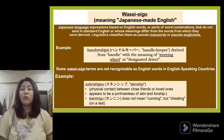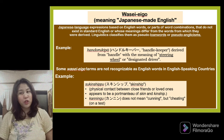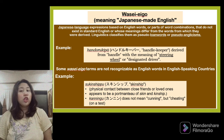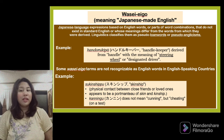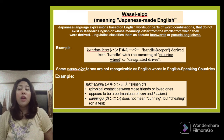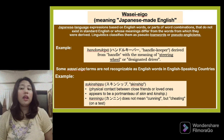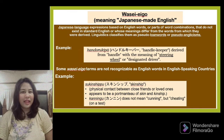Some Wasei-eigo terms are not recognizable as English words in English-speaking countries. For example, 'skinship' refers to physical contact between close friends or loved ones, appearing to be a blend of 'skin' and 'kinship.' Another example is 'cunning,' which does not mean cunning but rather cheating on a test.